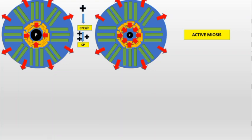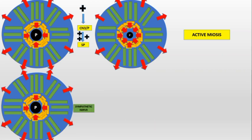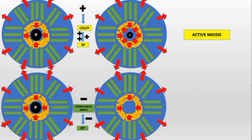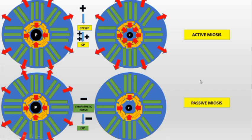The sympathetic nerve supplies the dilator pupillae muscles. When there is an inhibition of the sympathetic nerve, the supply to the dilator pupillae is cut. The force that was pulling the pupil outward — trying to make it big — is now lost, so only the sphincter pupillae force remains, making the pupil small. This is called passive miosis, because it is not due to active action of sphincter pupillae but due to loss of dilator pupillae.